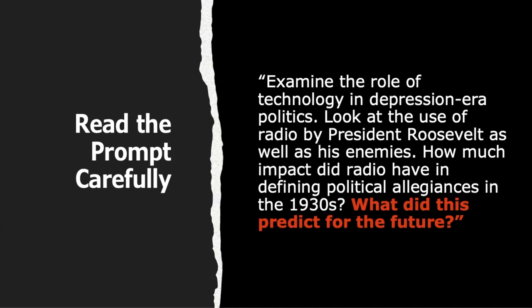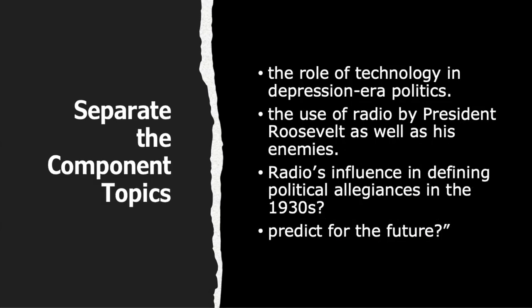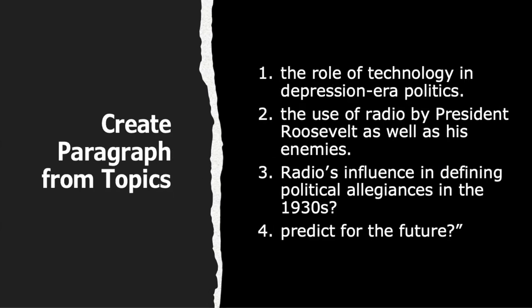So make sure that you read the prompt carefully. We have really four statements and questions in this prompt: the role of technology, the use of radio by Roosevelt and his enemies, radio's influence in defining political allegiances in this period, and a question asking you to speculate on what this might predict for the future. By the future, we're not talking about our future necessarily, as much as what happened afterwards in the foreseeable future. We can create paragraphs from these topics.